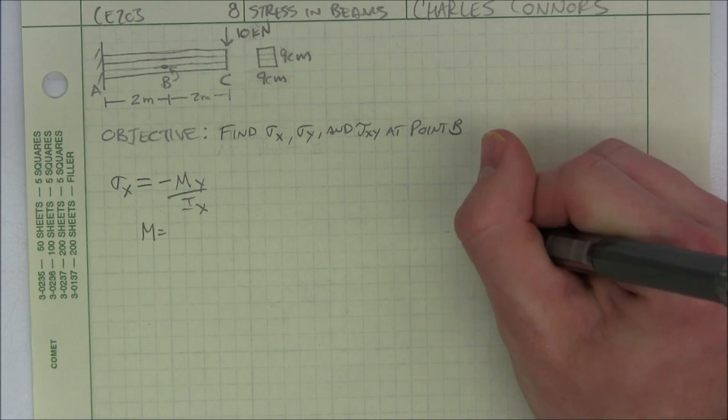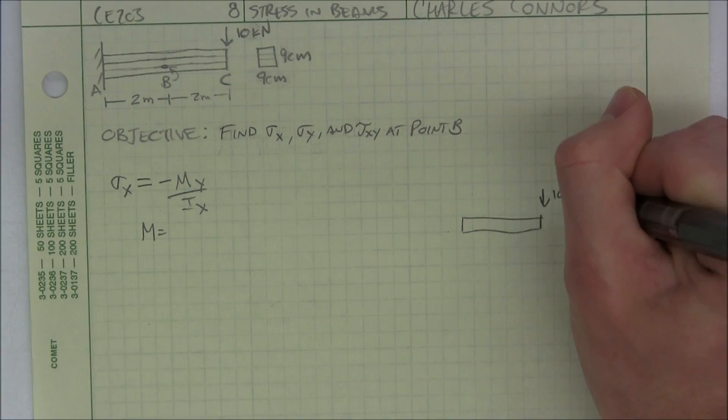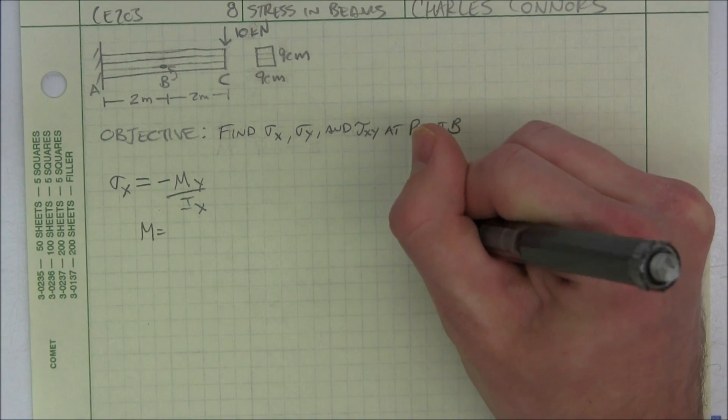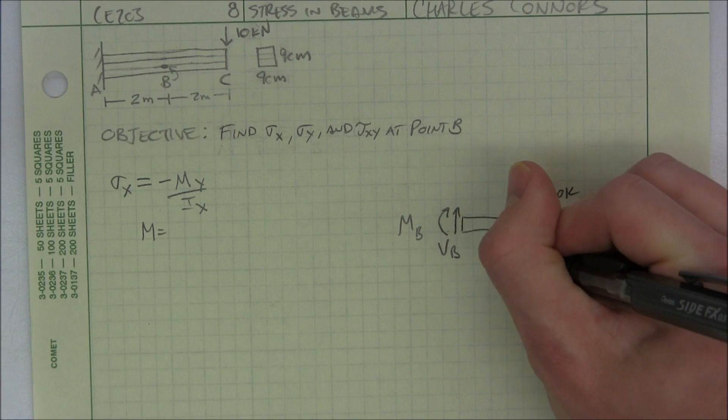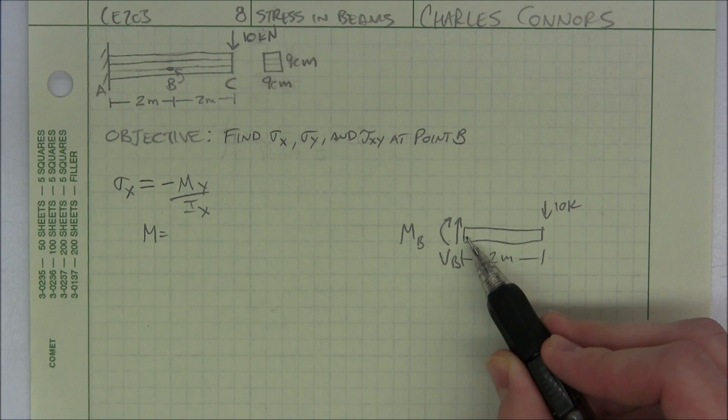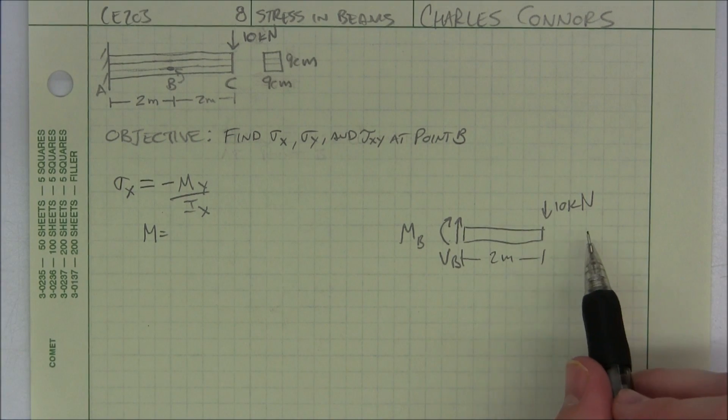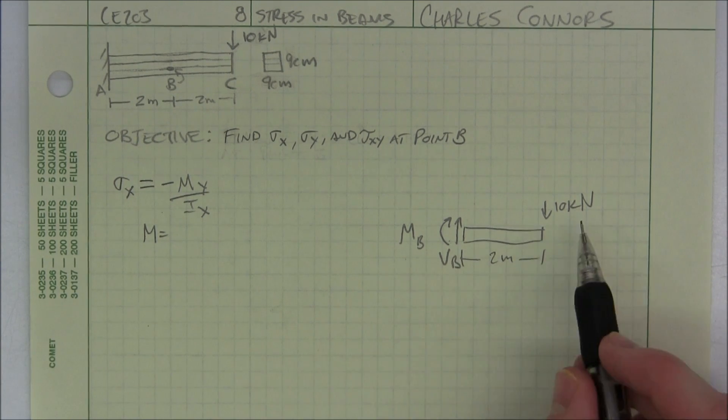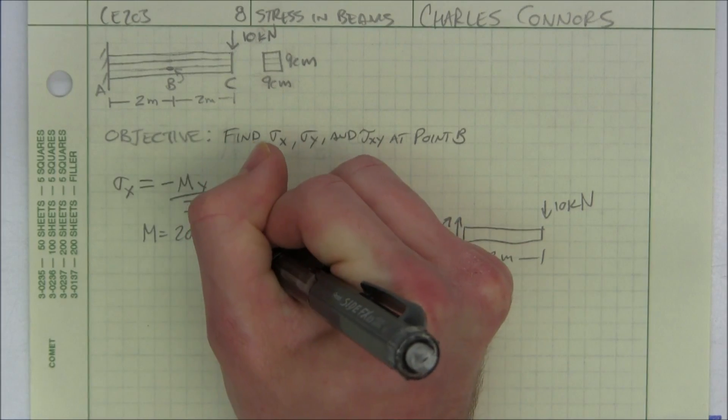Well, I'll draw a picture where we've cut at B. This is 10 kips. And this is the moment at B. And this is the shear at B. And this is two meters in distance. Take a moment at B. So I have 10 kilonewtons with a moment arm of two meters. Gives me a moment of 20 kilonewton meters.